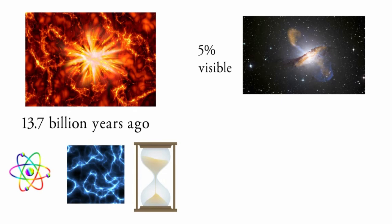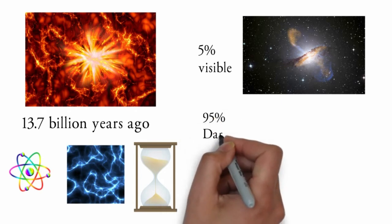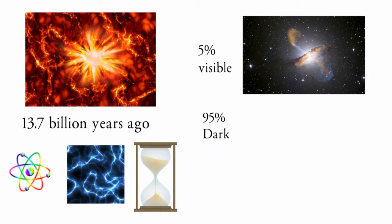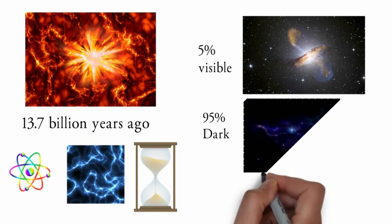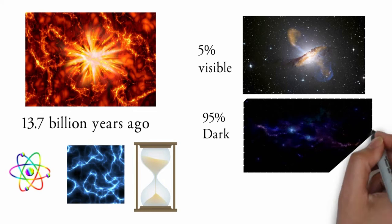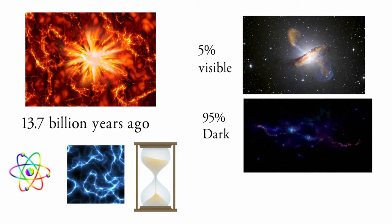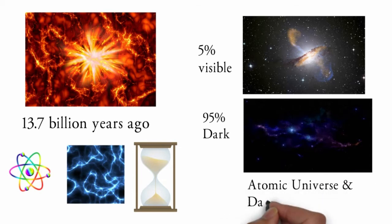The remaining 95% of the universe is the dark universe. The observable universe is about 90 billion light-years across. To comprehend the composition of the universe, we can categorize it as atomic universe and dark universe.